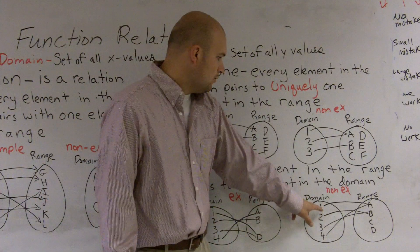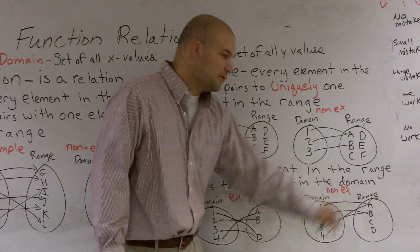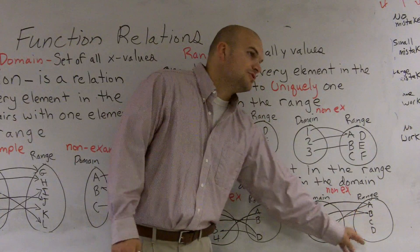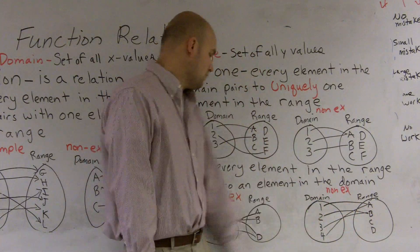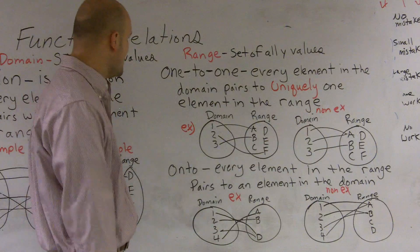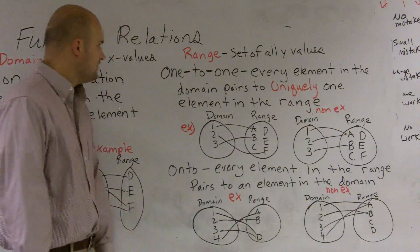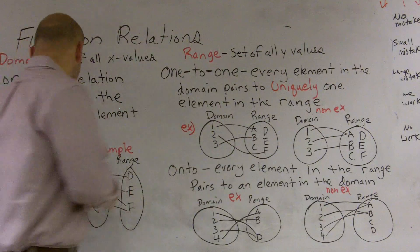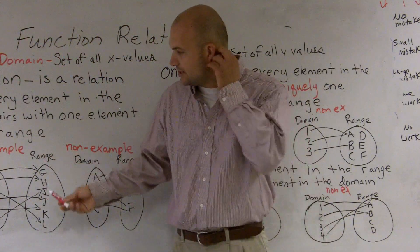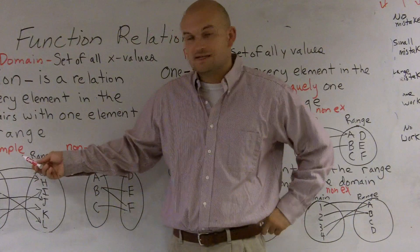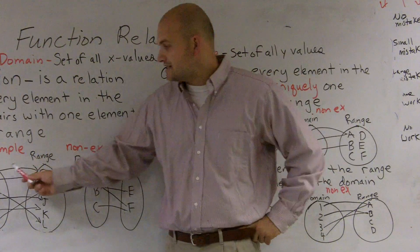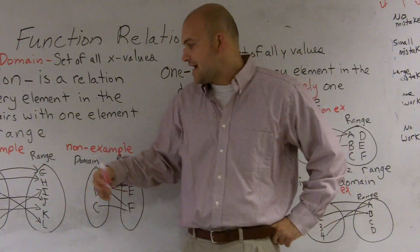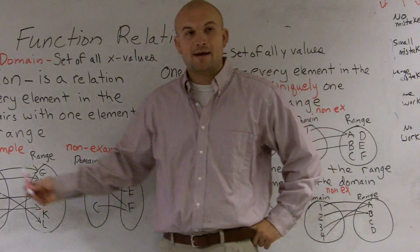A non-example of onto: one and three both go to a, and two and four both go to b, however there's nothing mapping to c and d — c and d do not map to the domain, so that is not onto. And a quick example: if you have both a one-to-one and onto function, every element in the domain goes to uniquely one element in the range, and every element in the range has a map to the domain.